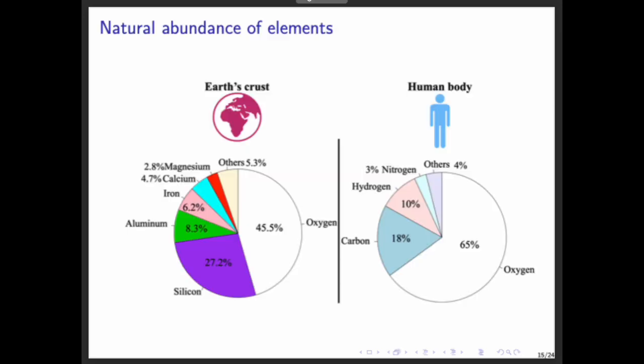The elements around us are not evenly distributed. In the Earth's crust, for instance, the most abundant element is oxygen, making up about 45%, followed by silicon at 27%, and aluminum at around 8%. But in the human body, the picture is different. Oxygen is still the most abundant at about 65%, but then comes carbon at 18%, and hydrogen at 10%.